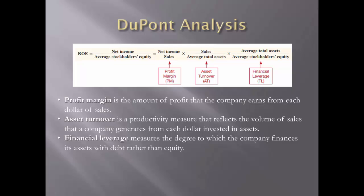Net profit margin depends on both the gross profit margin and the ability of a firm to control its expenses. Note that reducing operating expenses such as advertising and research expenditures can increase current operating profit at the expense of the long-term competitive position of a firm. Such earnings management practices sacrifice long-term benefits for short-term earnings targets, because expenditures on advertising and research often create long-term benefits.